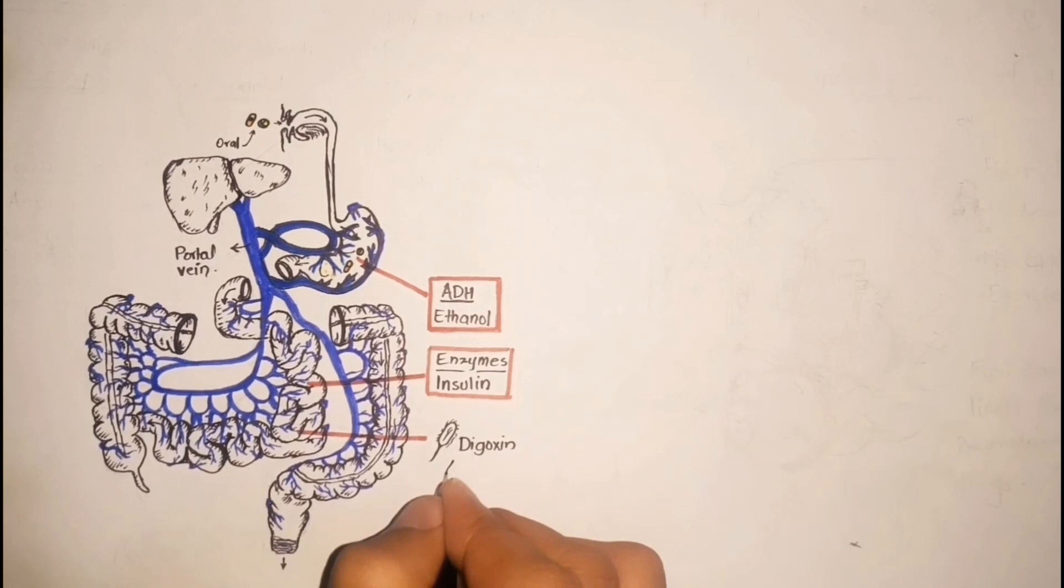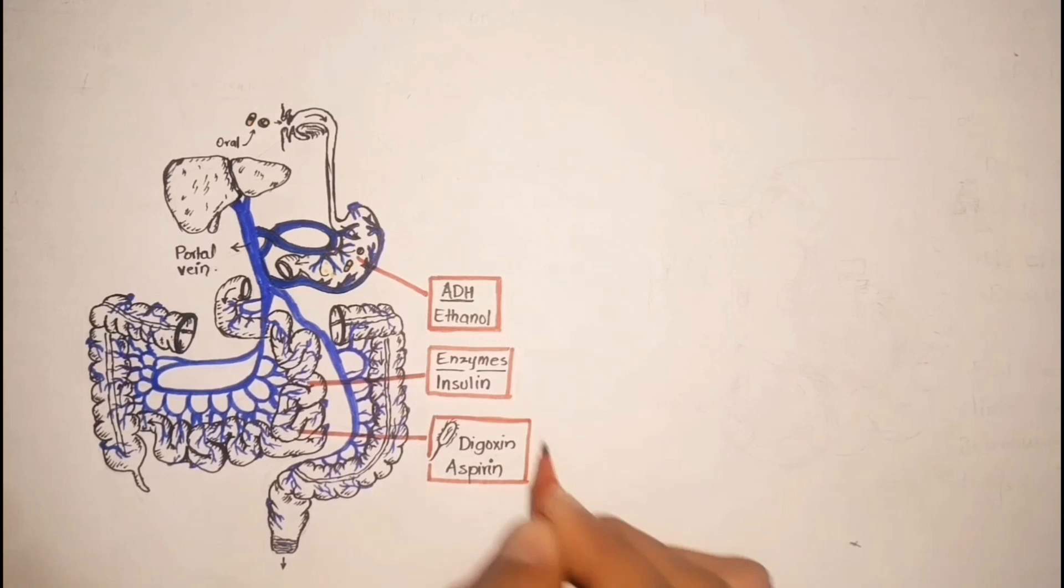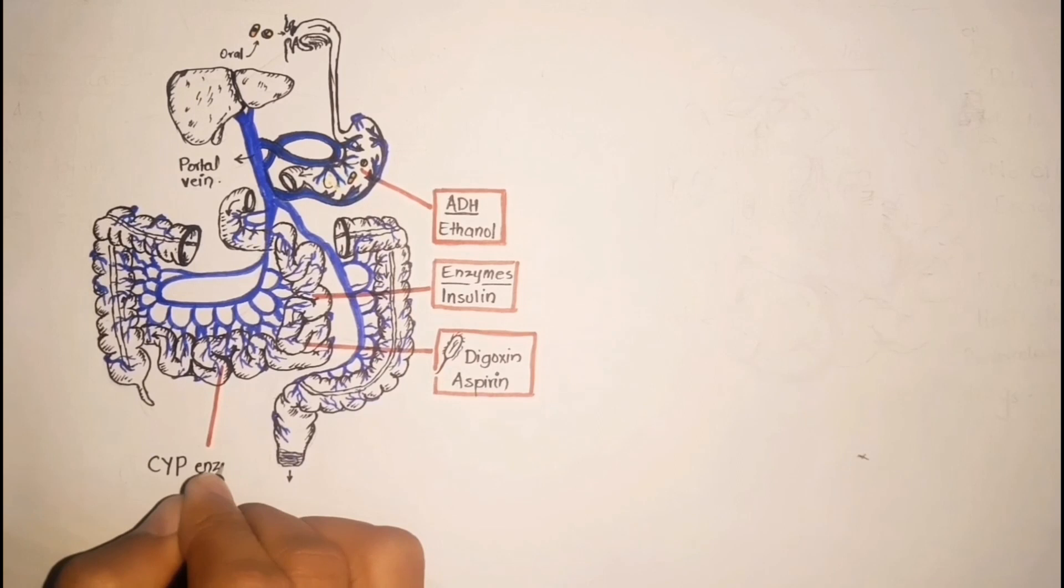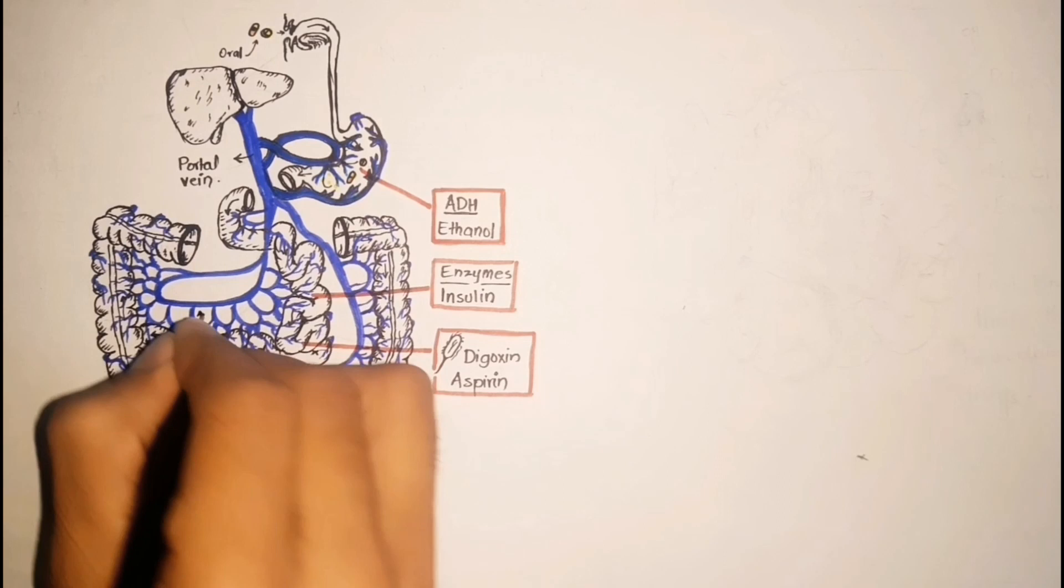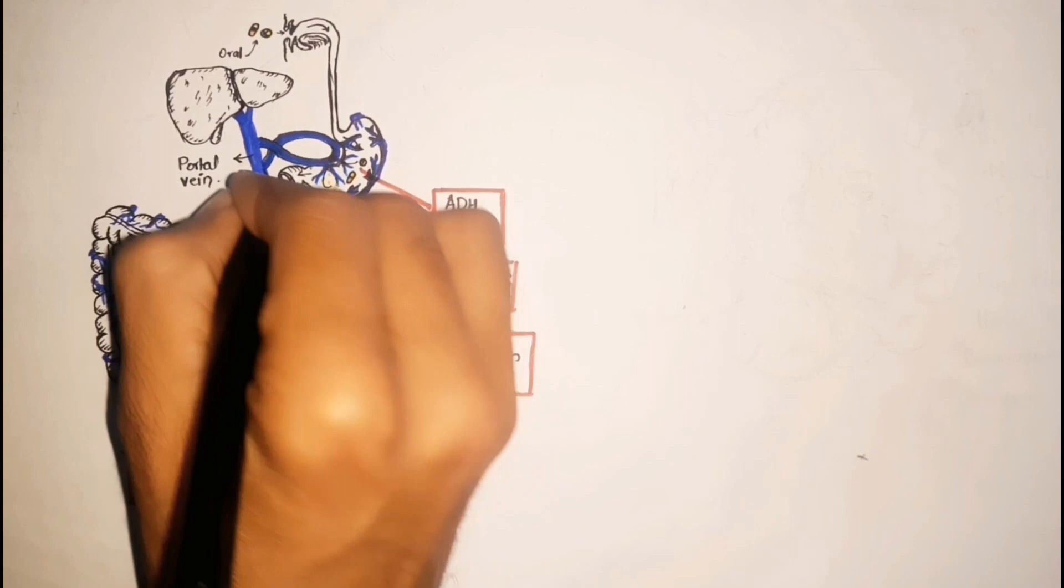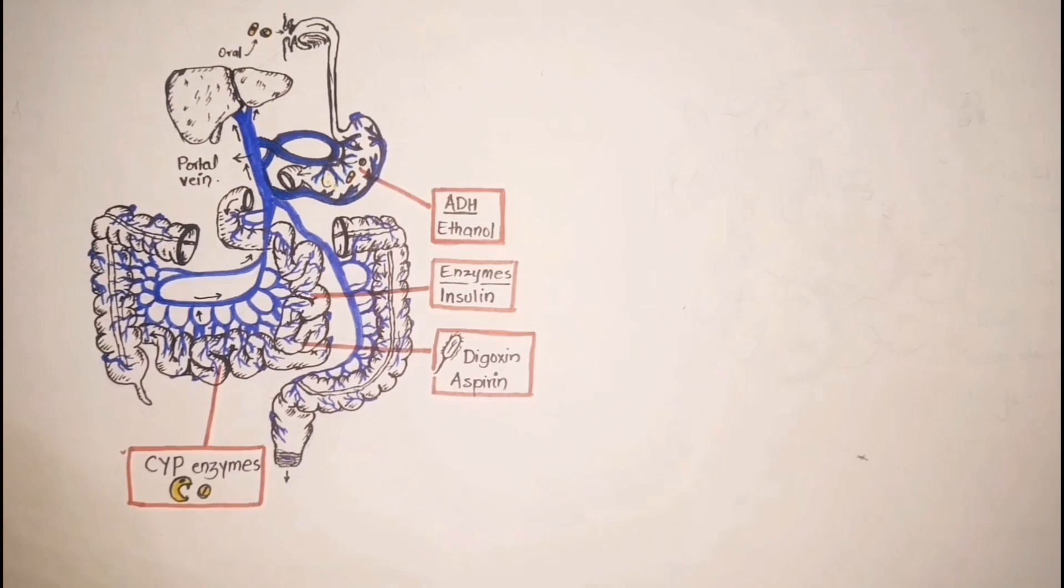While most of the first pass metabolism of drugs is carried out by the microsomal or CYP enzymes present in the intestinal walls. Most of the drugs are metabolized by this system. After this, if a drug passes from here, then it must pass from the liver through the portal vein, and thus significant amount of a drug gets metabolized here, mostly by the CYP enzymes.